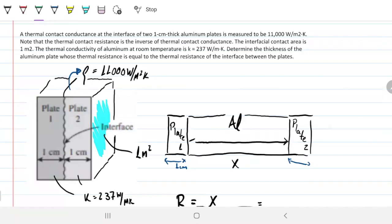The thermal contact conductance at the interface of two one centimeter thick aluminum plates is measured to be 11,000 watts per meter squared Kelvin. Note that the thermal contact resistance is the inverse of the thermal contact conductance.